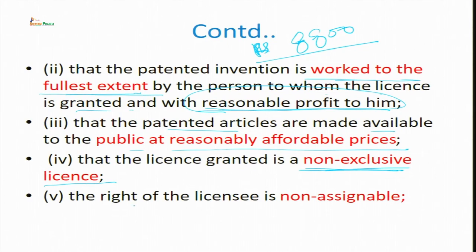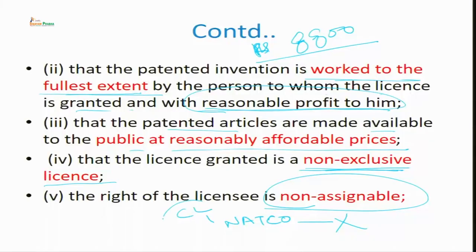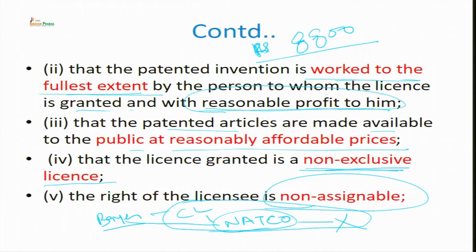This right to license is also non-assignable. If compulsory license is granted to NATCO, NATCO cannot again assign that to anyone else. For example, like a person subletting a floor — the person who takes it on rent cannot sublet it. The compulsory license was granted from Bayer to NATCO. NATCO has no right to assign it further. That is the purpose of this section.